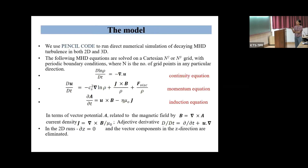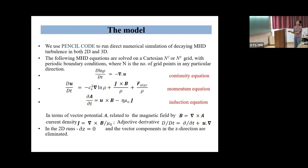To answer these questions, we use the Pencil Code to run direct numerical simulations of decaying MHD turbulence in both 2D and 3D, solving the following MHD equations: the continuity equation, momentum equation, and induction equation. Here rho is the density, u is the velocity field, and viscosity is the viscous force. The induction equation is in the uncurled version in terms of the vector potential A — that is, delta A by delta t — related to the magnetic field by B equals del cross A, current density J equals del cross B by mu-naught. For the 2D runs, we set delta z equals zero and eliminate vector components in that direction.